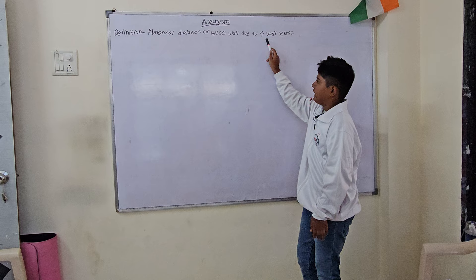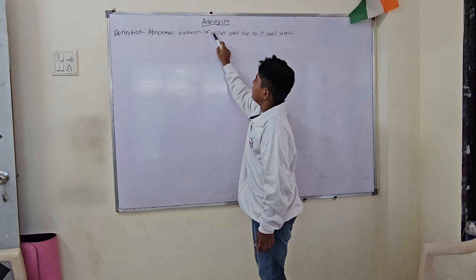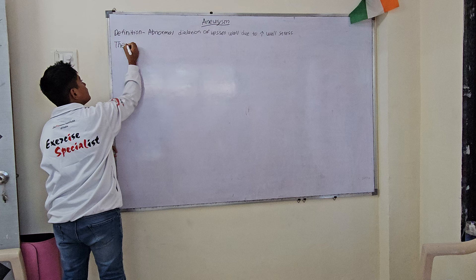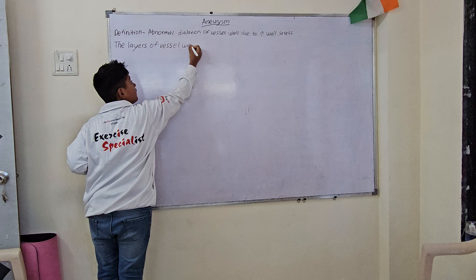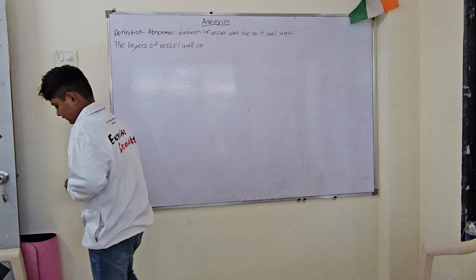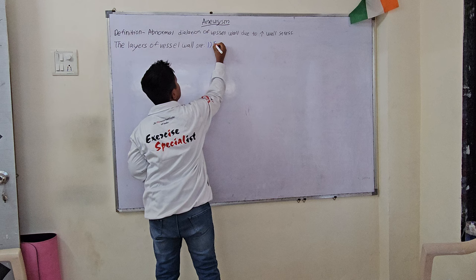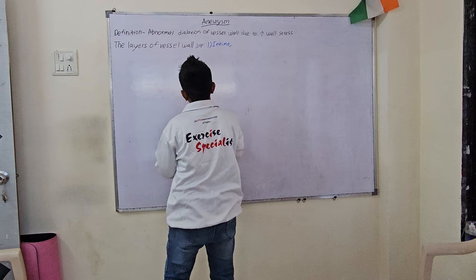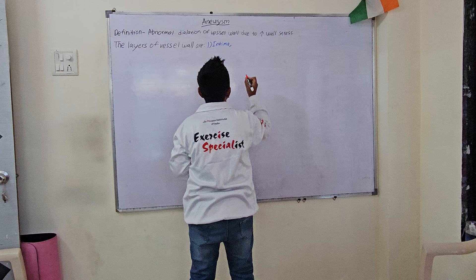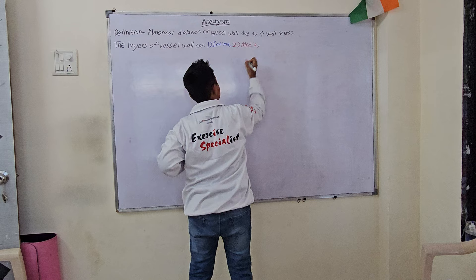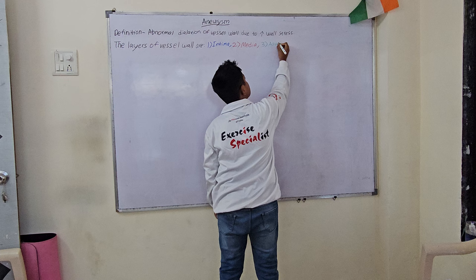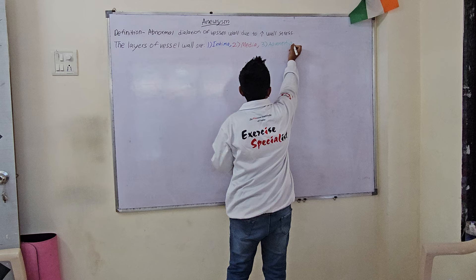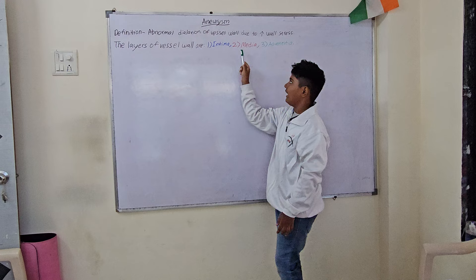Now let's see the layers of the vessel wall. The layers of the vessel wall are: first is intima, then media, and adventitia.